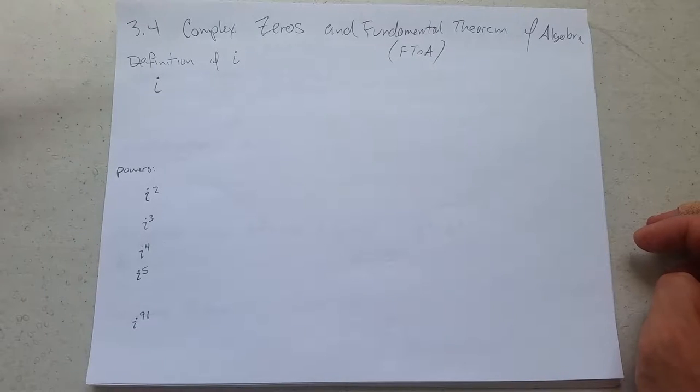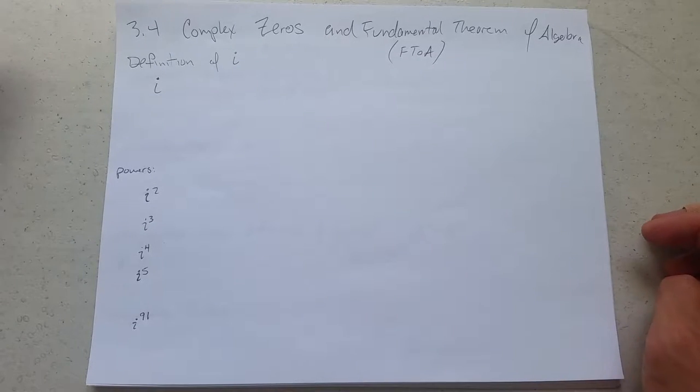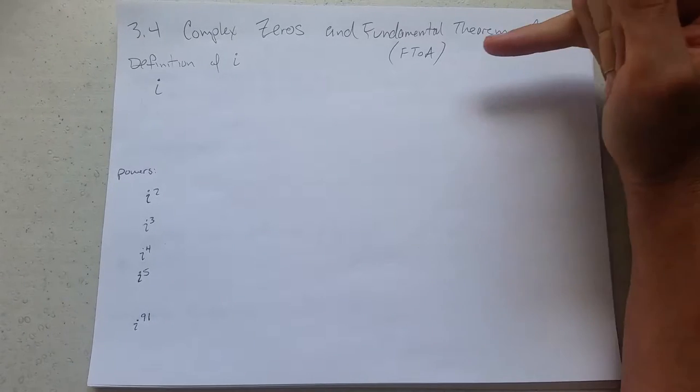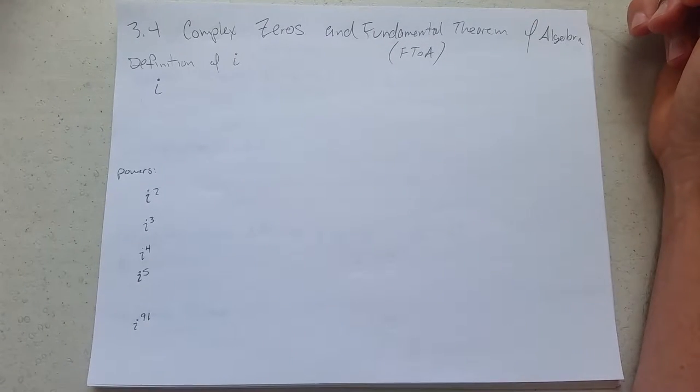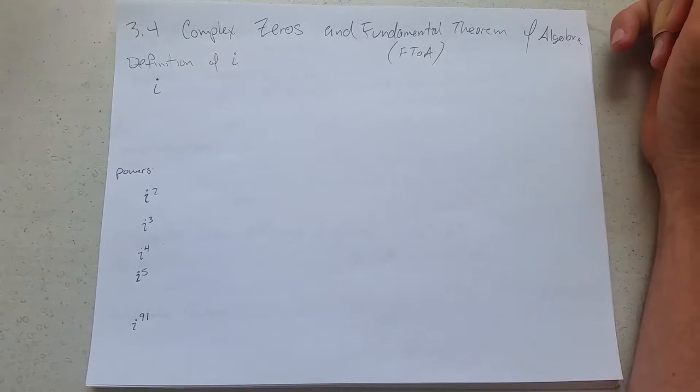The last section in chapter 3 is complex zeros and the fundamental theorem of algebra, which I'll just call FTOA. And we're going to start out with what is i.